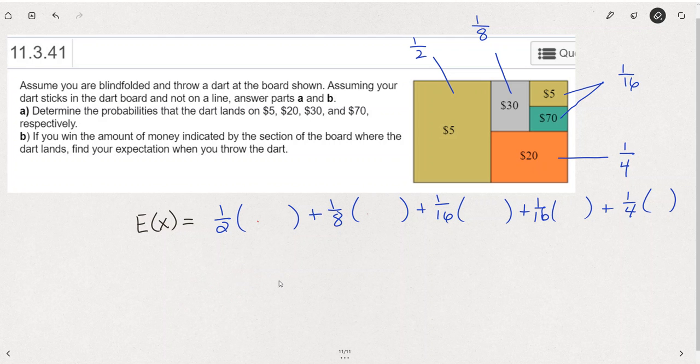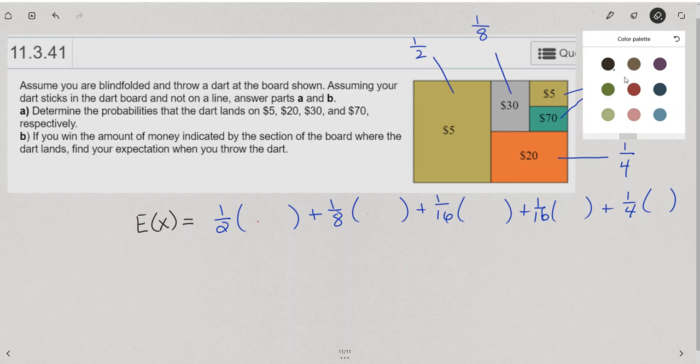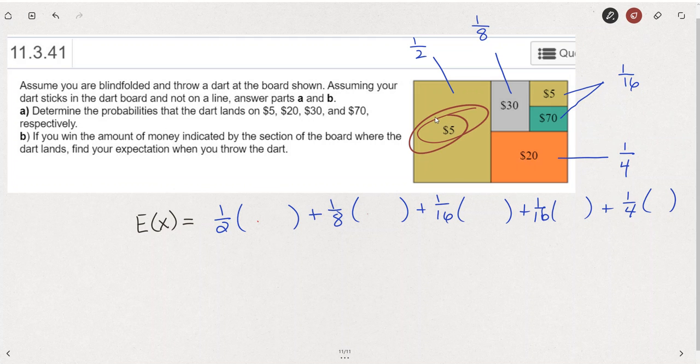So once we have that, we're just going to write the expectation formula. I'm going to show that I am keeping this $5 and this $5 separate just to keep it easy for now. So the only time you've got to combine them is in part A, when you say the probability of it landing on $5.